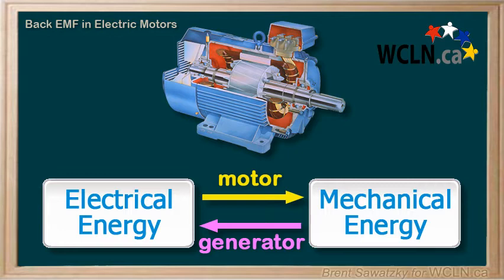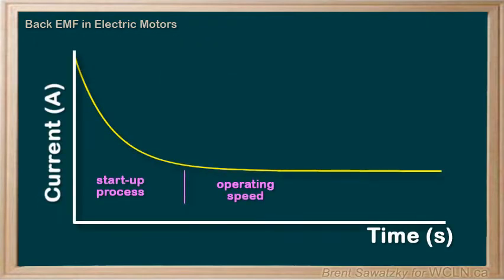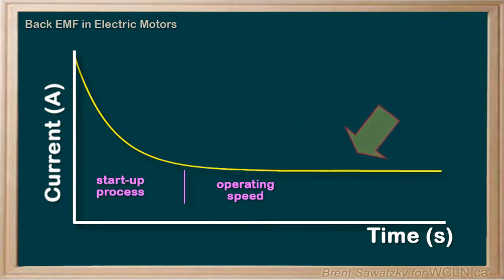To truly understand how motors work, you need to understand back EMF. One cool result of back EMF in motors is that once motors are spinning, they use less current. The current to get a motor starting to spin is significantly higher than the current required to keep it spinning. Back EMF increases with the rate of spinning, just like a generator, and this back EMF opposes the input voltage, so the overall current must decrease.